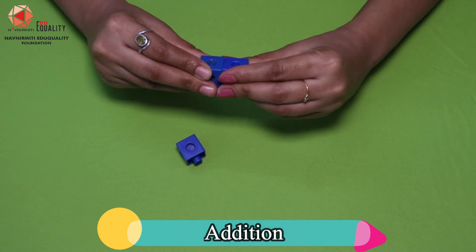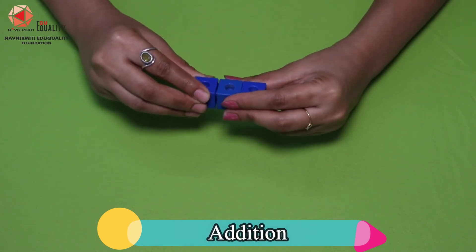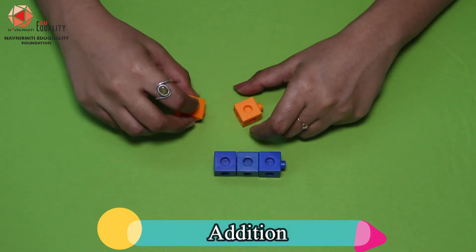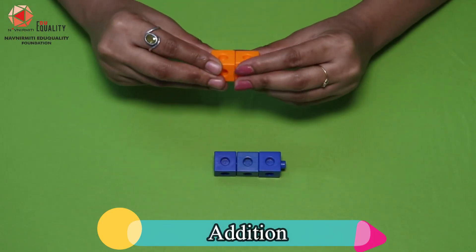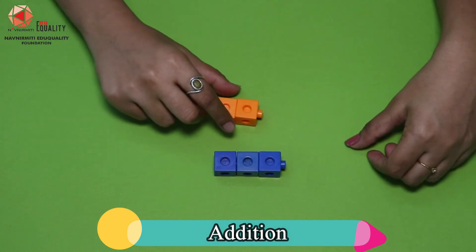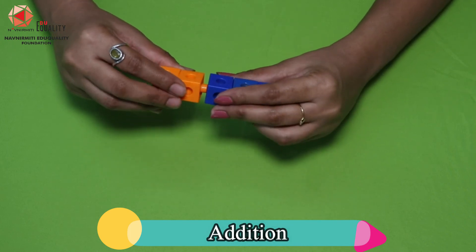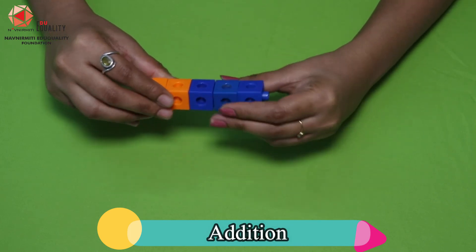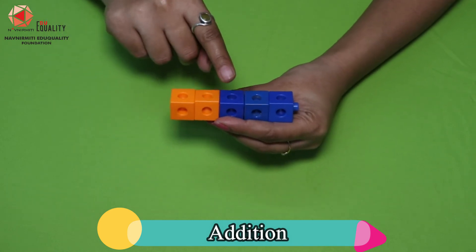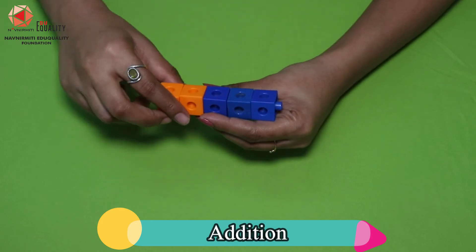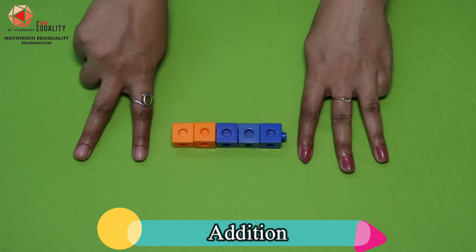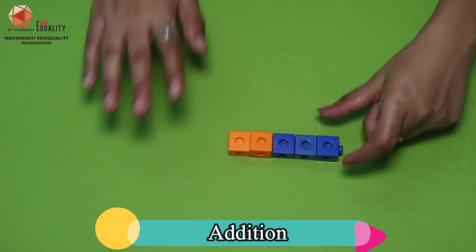Let's count the blue blocks. 1, 2, and 3. Now let's count the orange blocks. Now let's join the orange and blue blocks. Let's count them. 1, 2, 3, 4, and 5. So 3 plus 2 equals 5.